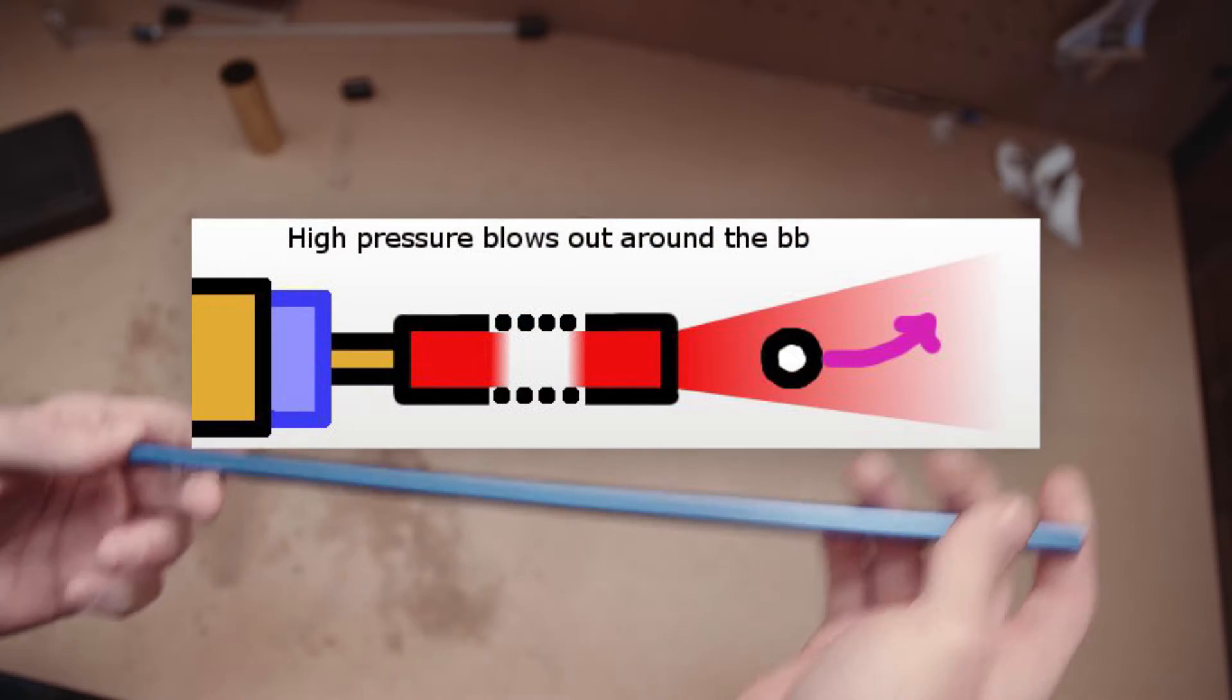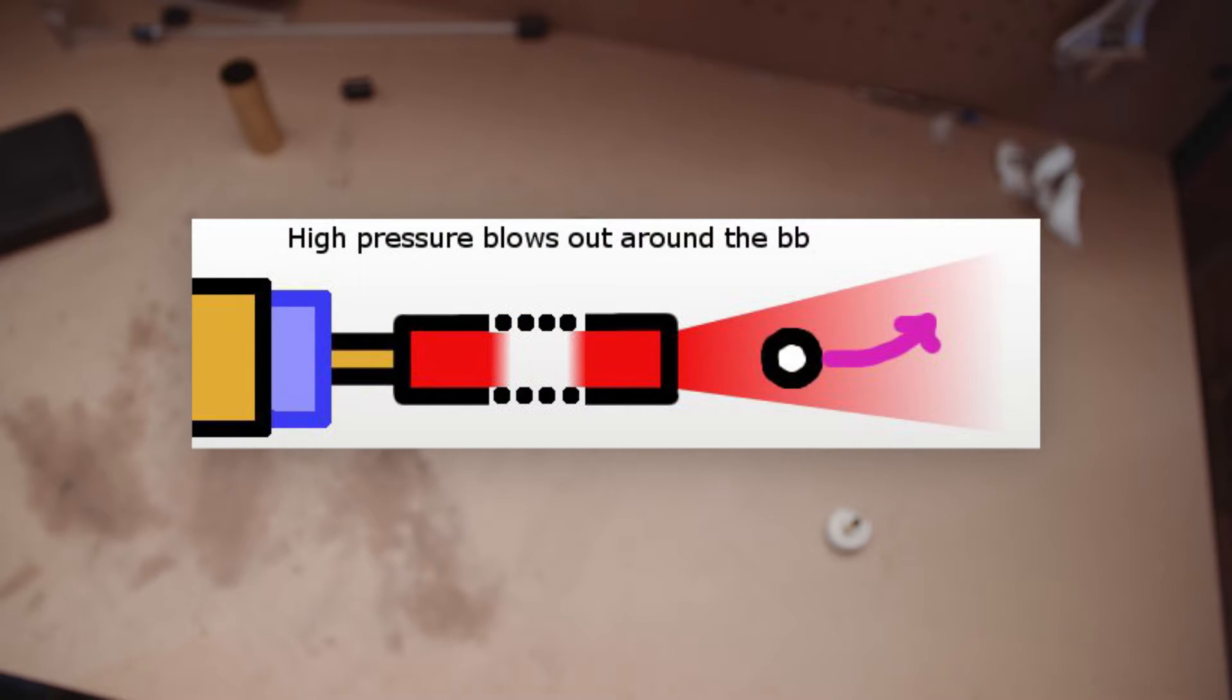When firing gels, if the cylinder has a much greater volume than that of the barrel, there will be turbulent air behind that will spin the gel in an undesired way, causing inconsistency and accuracy loss.